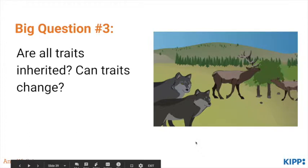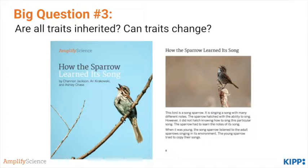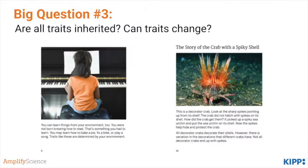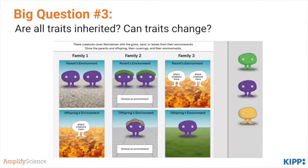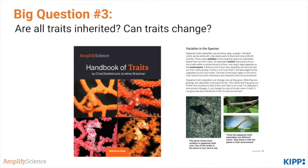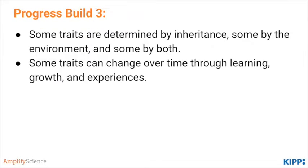On to big question number three: are all traits inherited, and can traits change? They read the book How the Sparrow Learned Its Song, and learn that although all sparrow species sing, in some places their songs sound one way and in other places very different. So they learn about traits that are actually not inherited but are a product of the environment, such as learning to play the piano. They learn about decorator crabs, which take objects from their environment and use them as camouflage. They then model this with little monsters who change depending on their environment, and read information about how traits are affected by the environment, such as peppered moths changing color over time.